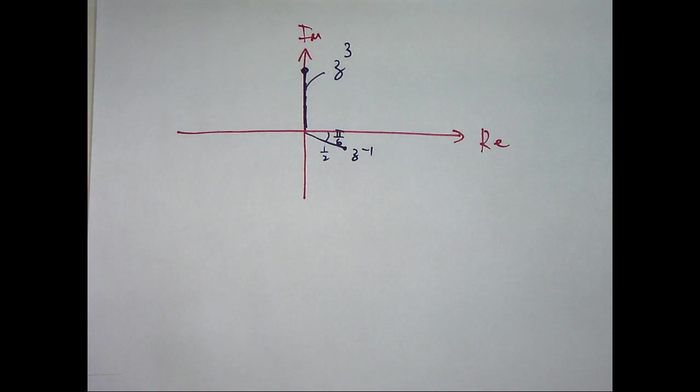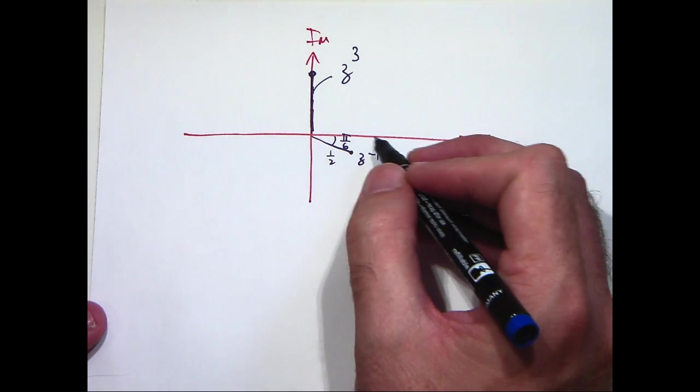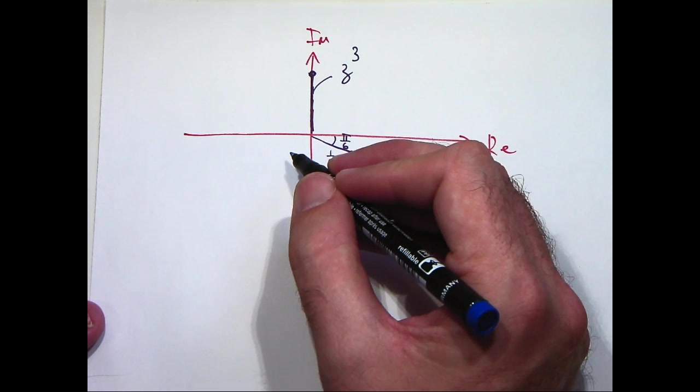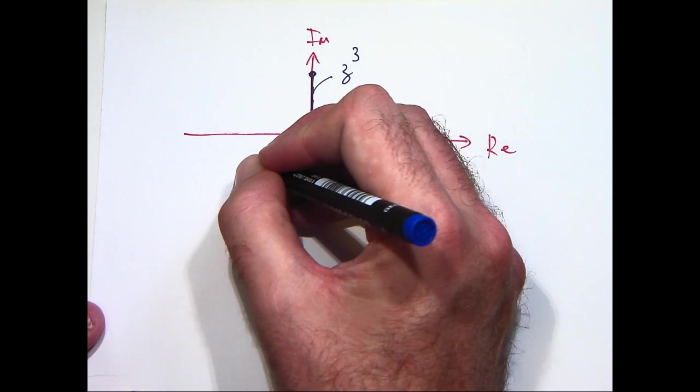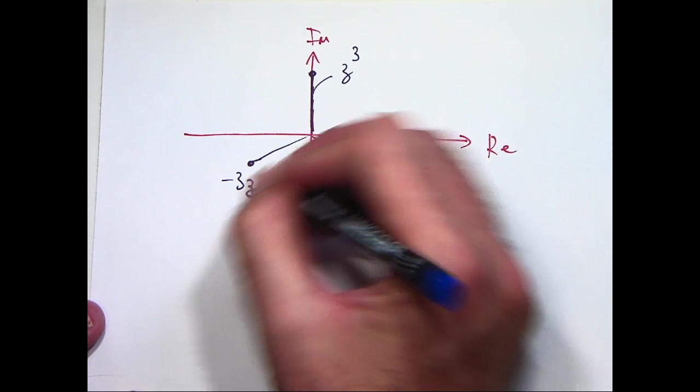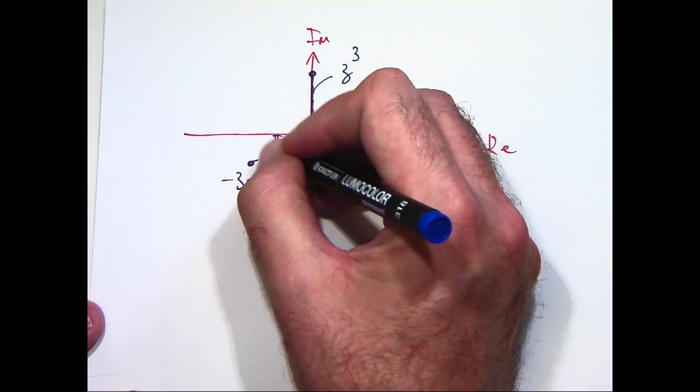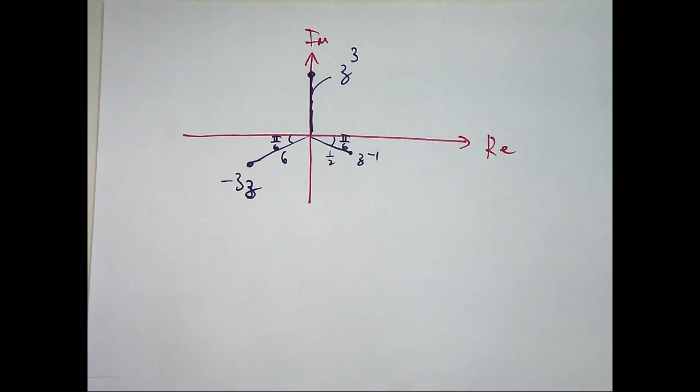And lastly, -3z was 6e^(-i5π/6). So we go out 6 units and then around in a clockwise direction, 5π/6. Okay, so that's the end of our question.